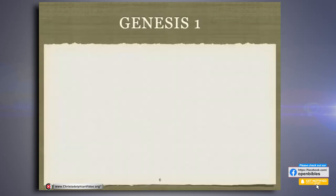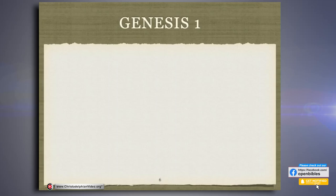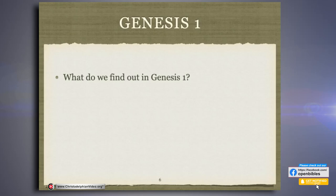We just read Genesis 1. What do we find out in Genesis chapter 1? We read the whole chapter, not just where it talks about animals, because it's important to understand what God did when he created all of the earth. God created heaven and earth in verse 1, day and night in verse 5, the heavens in verse 8, dry ground and plants in verses 10 and 11, the sun and moon in verse 16, fish and birds in verse 21, and then every living thing in verse 24.